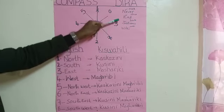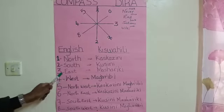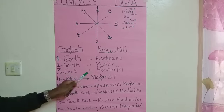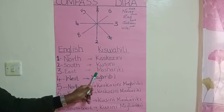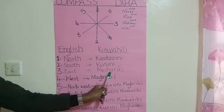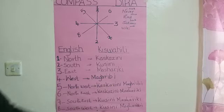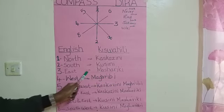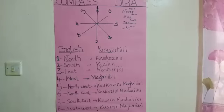Number three is East. East in our language, Kiswahili, is 'mashariki.' We say mashariki. So east is mashariki. That's wonderful and so great.